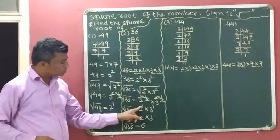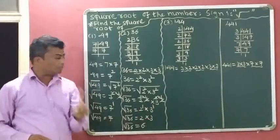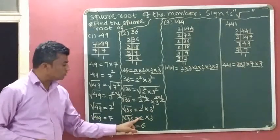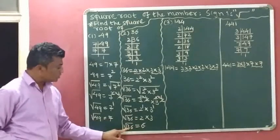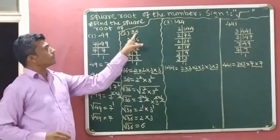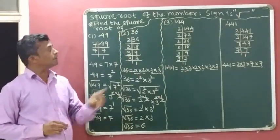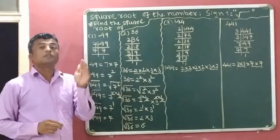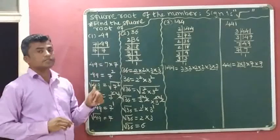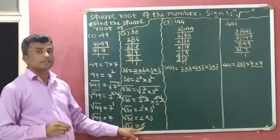To confirm: 2 raised to 1 means 2 one time, and 3 raised to 1 means 3 one time. So 2 times 3 equals 6. Square root of 36 is 6. Normal method: 6 times 6 is 36, so the square root of 36 is 6. With the regular method the answer is also 6.